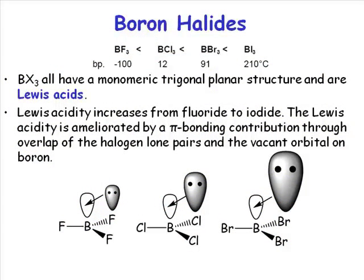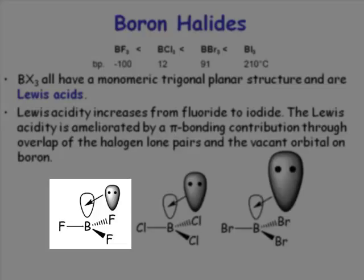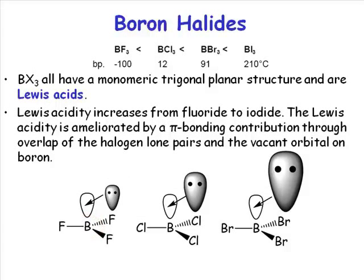In order to explain the trend in Lewis acidities, we have to look beyond our simple VSEPR trigonal planar model. Boron trifluoride is trigonal planar and has an SP2 hybridised boron atom. Because of the SP2 hybridisation, there is a P orbital above and below the trigonal plane — a vacant P orbital — and this is what's responsible for the Lewis acidity of these boron halides. That vacant P orbital has just the right symmetry and shape in space to overlap with the lone pair orbitals present on the halide atoms.